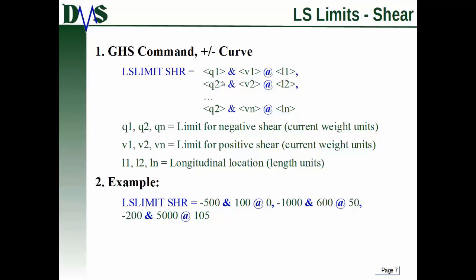So you do Q1 and V1. Q1 is the limit for negative shear, V1 is the limit for positive shear. You actually type this in as a negative value and a positive value for the limit at the location. So you're providing two shear limits at each location.